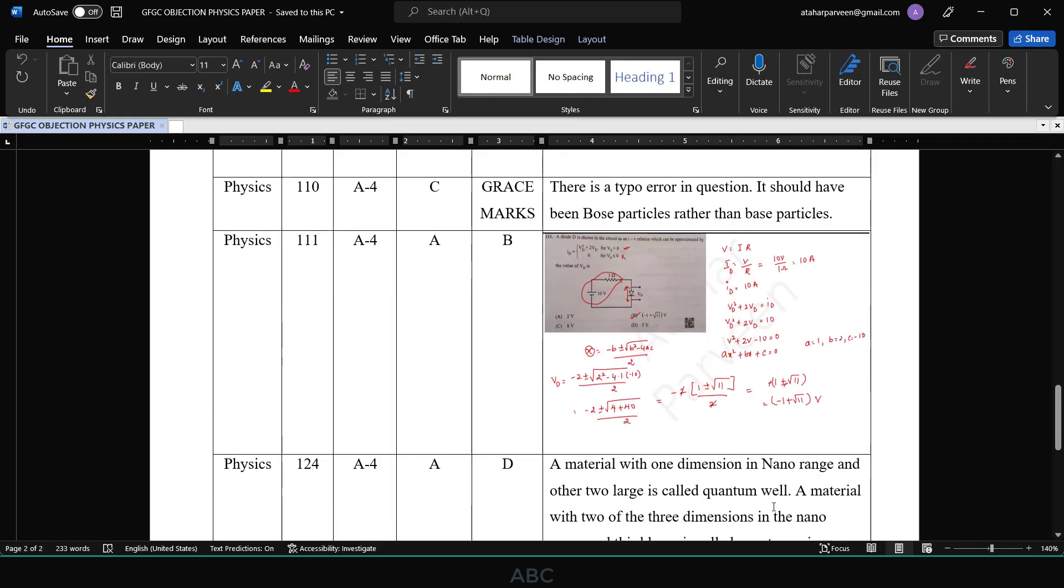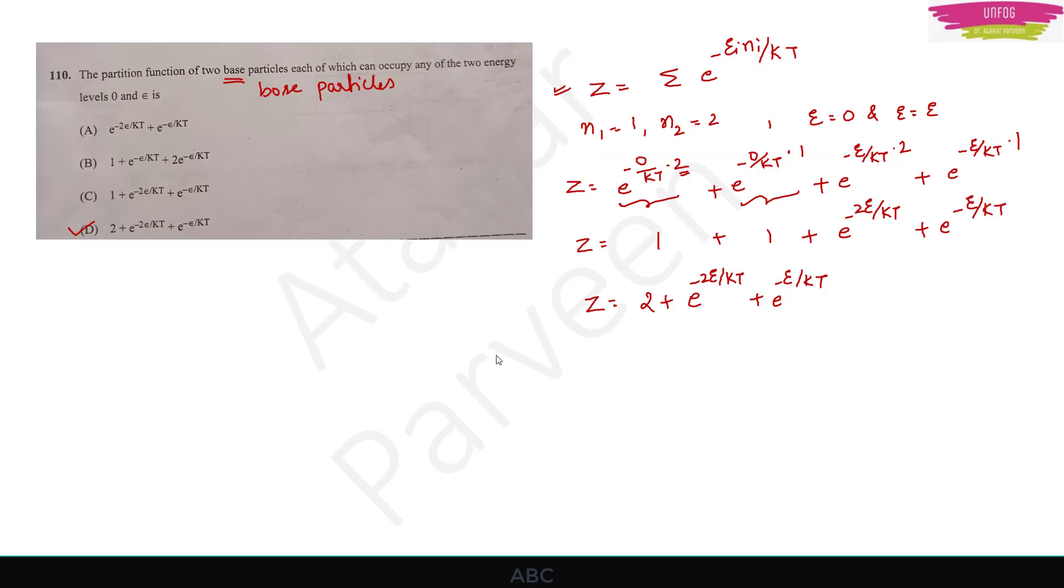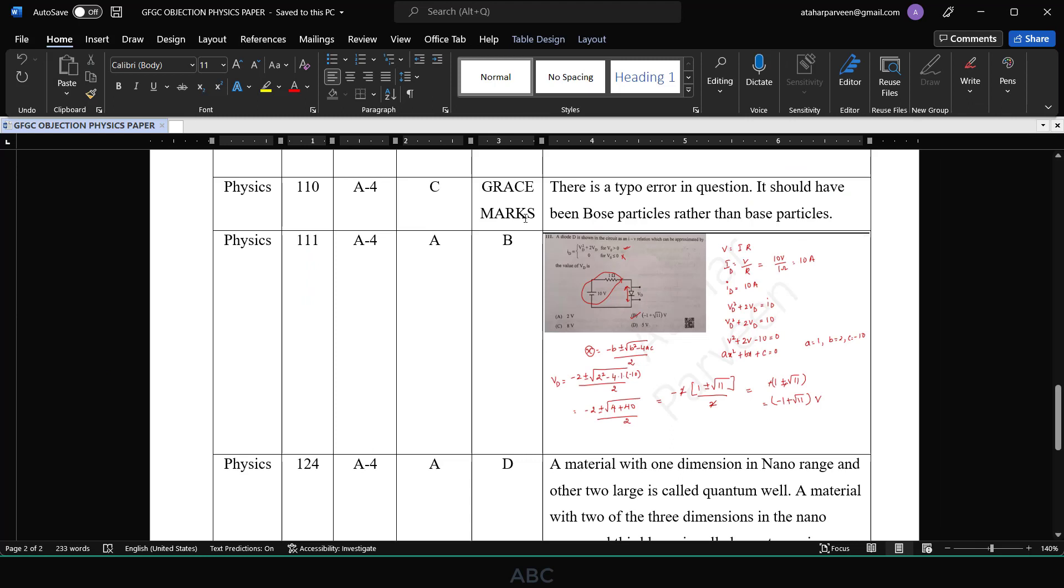Next question I have raised is question number 110. This was about Bose particles. They were asking that the partition function of two Bose particles each of which can occupy any of the two energy levels 0 and epsilon. Actually there was a typo error here, instead of Bose they had written base. People cannot relate to it immediately in the exam pressure, how can one relate base to Bose. This is a typo error, a genuine mistake, so I am asking for grace marks for that question.